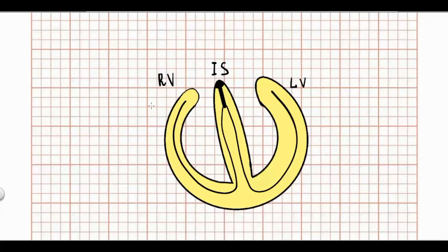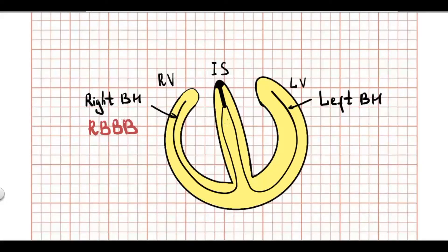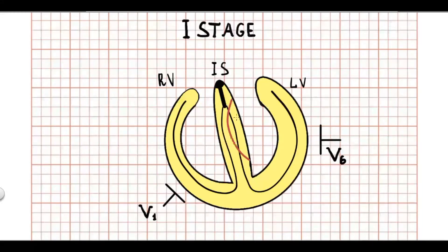So why is it so? Let's check the depolarization of ventricles in this case. These are right and left bundle branches. So we have a right bundle branch block. The first stage of depolarization is depolarization of interventricular septum. A right bundle branch block has no influence in this stage. The resulting depolarization vector is oriented from the left to the right. So according to this in V1 we see small positive R wave and in V6 negative Q wave.